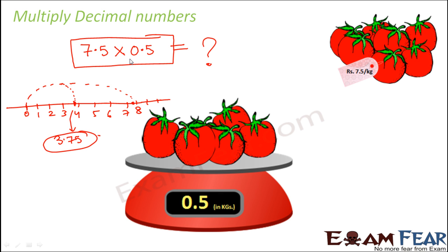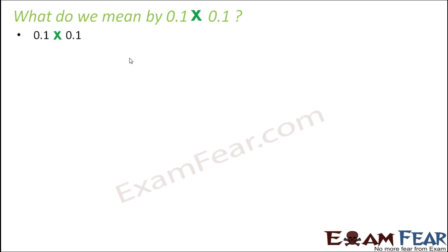Now do you understand what is happening when we multiply two decimal numbers? I showed this on the number line just to relate it to the same concept used for whole numbers — the concept remains the same. But on a number line we can only see whole numbers, not decimal numbers. So how can we multiply on a number line? We can't. So what is the real meaning of multiplication of two decimal numbers? Let us consider the simplest case: 0.1 multiplied by 0.1.